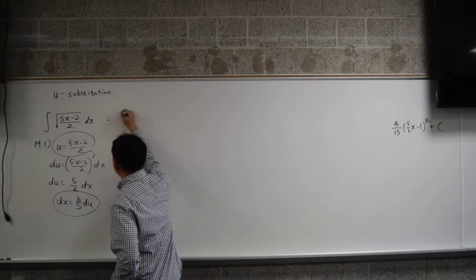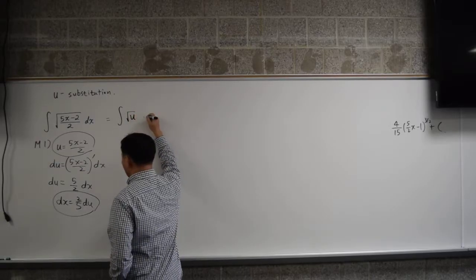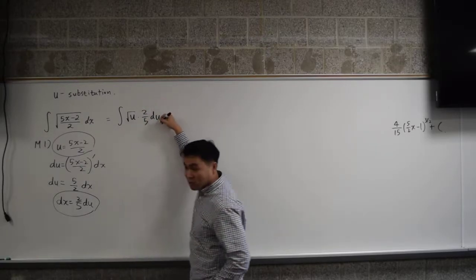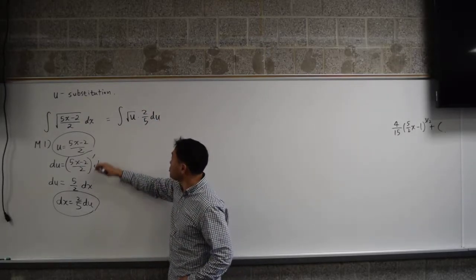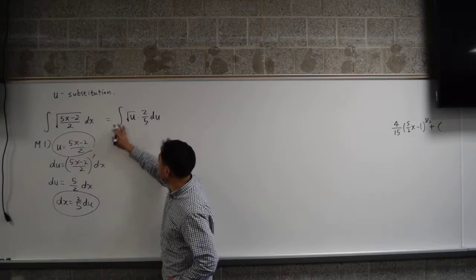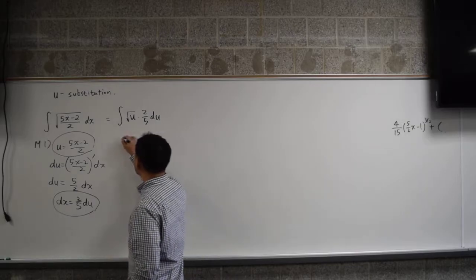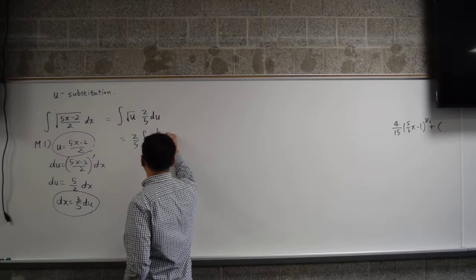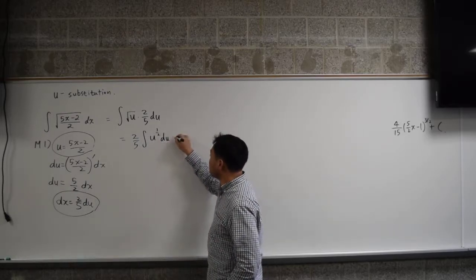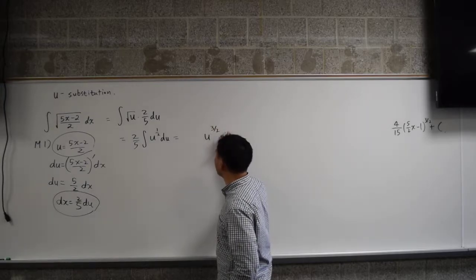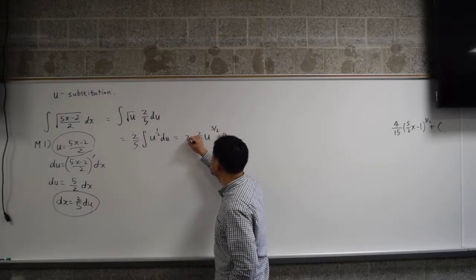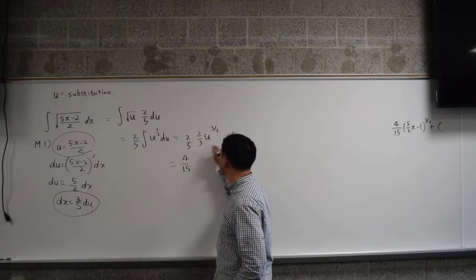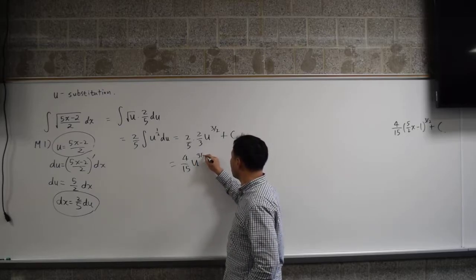So this integral now becomes the integration of u to the 1 half, and then times 2 fifths du. dx now became 2 fifths du, and 5x minus 2 over 2 became just u. Then the integral is 2 over 5 integration of u to the 1 half power du. Add 1 to the exponent, which is 3 over 2. Put the reciprocal in front, which is 2 thirds. 2 over 5. So that's 4 over 15. u to the 3 over 2 plus c.